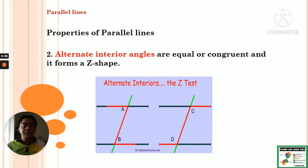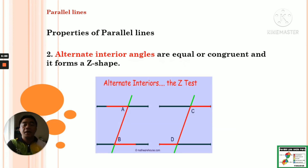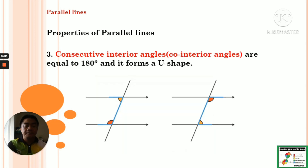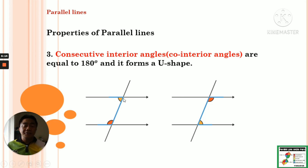Alternate interior angles form a letter Z. Angle A and angle B are alternate interior angles — inside, in between the parallel lines. We also have alternate exterior angles. Consecutive interior angles have a sum of 180 degrees — they are supplementary angles — and they form the shape of a letter U.